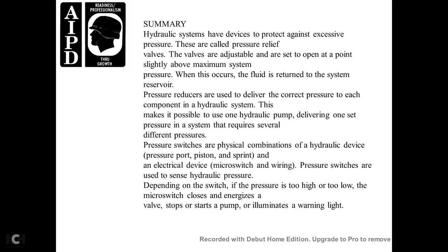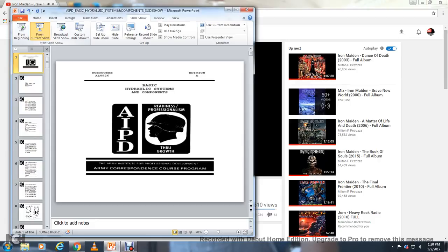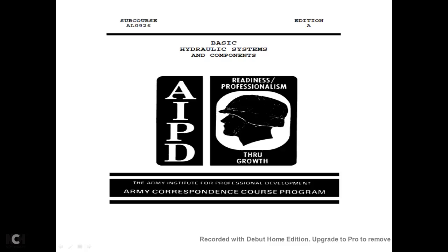Summary — Lesson 3. Hydraulic systems have devices that protect against excess pressure, called pressure relief valves. These valves are adjustable and are set to open slightly above the maximum system pressure, returning fluid to the reservoir when this occurs. The pressure reducer is used to deliver the correct pressure to each component of the hydraulic system, making it possible for one hydraulic pump to supply a system that requires several different pressures. Pressure switches are a combination of hydraulic device, pressure piston or diaphragm, spring, and electrical device (micro-switch) and wiring. Depending on the switch setting, when pressure is too high or too low, the micro-switch closes and starts or stops pumps or illuminates a warning light. This completes the Basic Hydraulic Systems and Components course, AL0926 Edition 8, Army Institute of Professional Development.